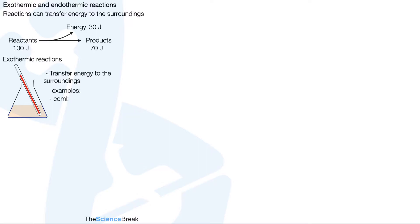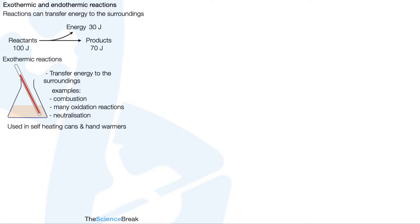Examples of exothermic reactions include combustion reactions, which is the same thing as burning. Many oxidation reactions are exothermic — in fact, combustion is an oxidation reaction. Neutralization reactions are also exothermic, for example acid with alkali or acid with base. These types of reactions are used in self-heating cans and hand warmers.